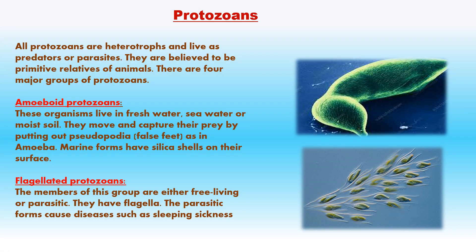Protozoans are a diverse group; all are heterotrophs and live as predators or parasites. Each protozoan is capable of functioning as an independent unit, performing all vital activities of life. They are believed to be primitive relatives of animals and are found in all environments. Amoeboid protozoans are found in fresh water, sea water or moist soil; they do not have a definite shape and have pseudopodia (false feet) for movement and capturing prey. Marine forms like Radiolaria have silica shells. Some members are parasites — e.g., Entamoeba causes amoebic dysentery in man.